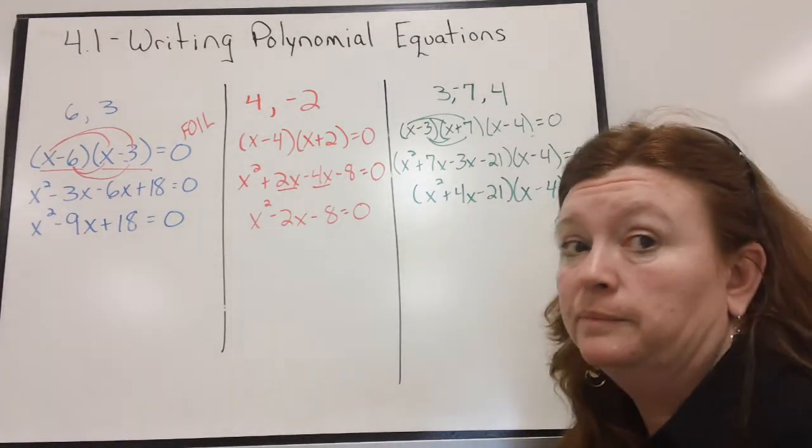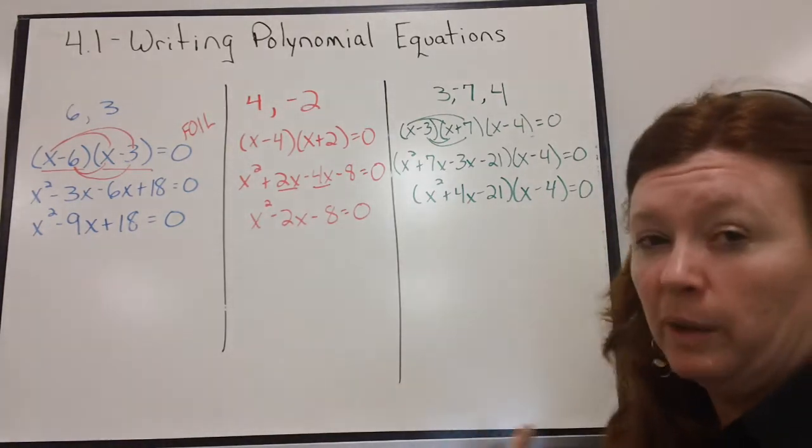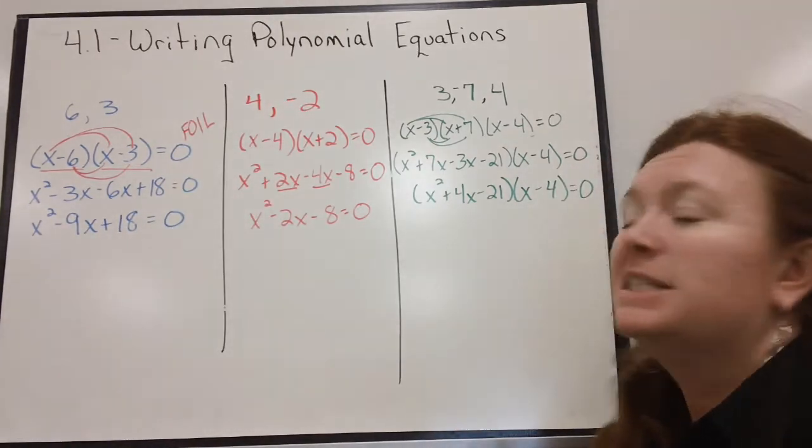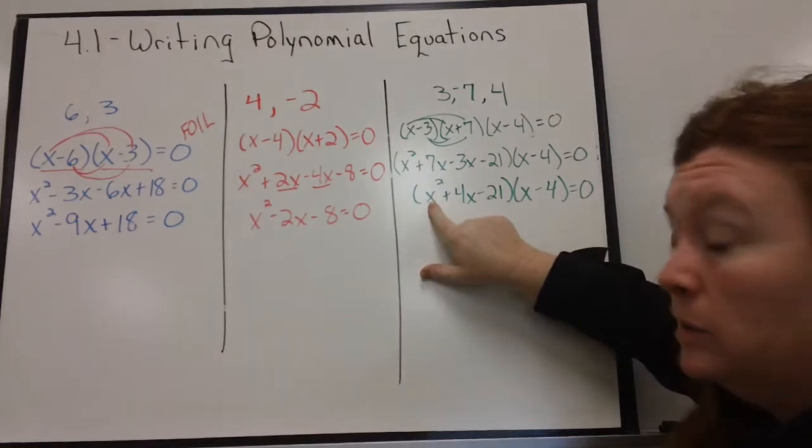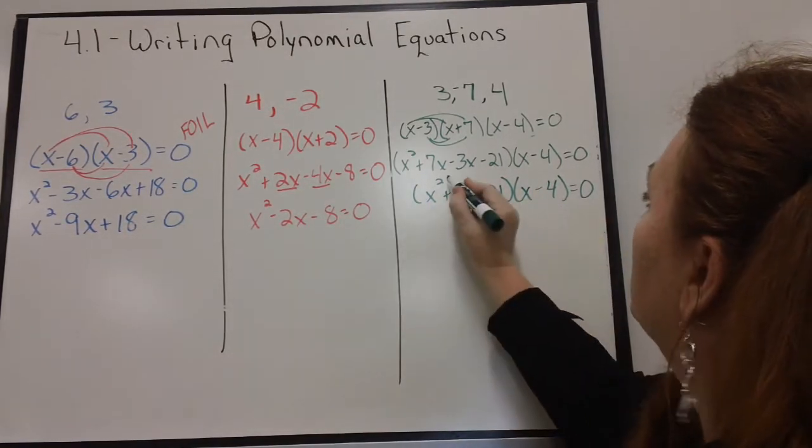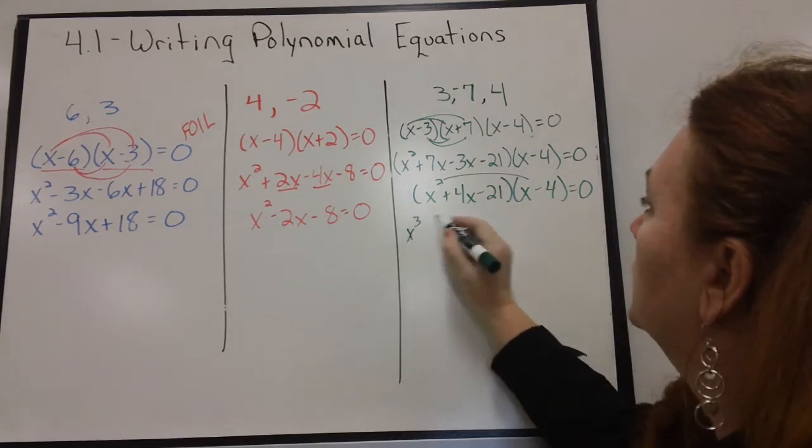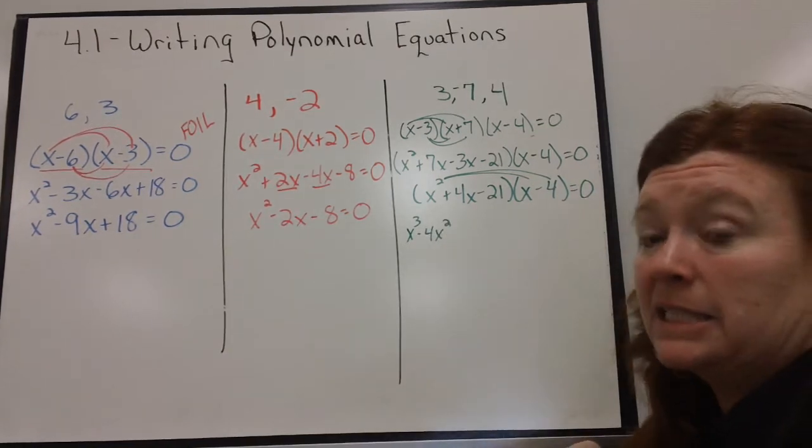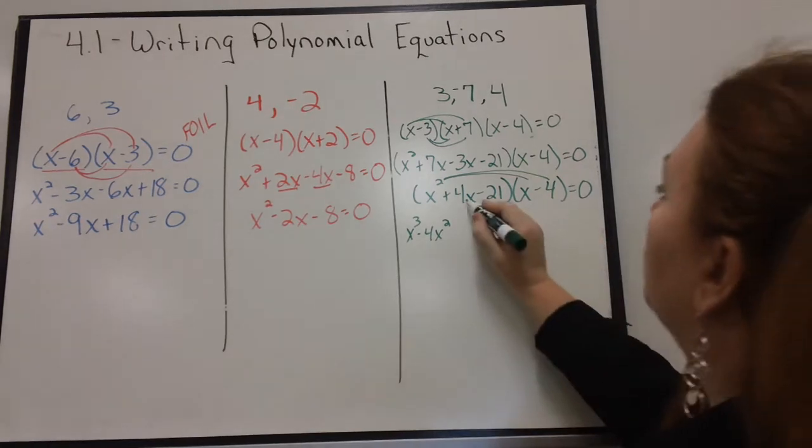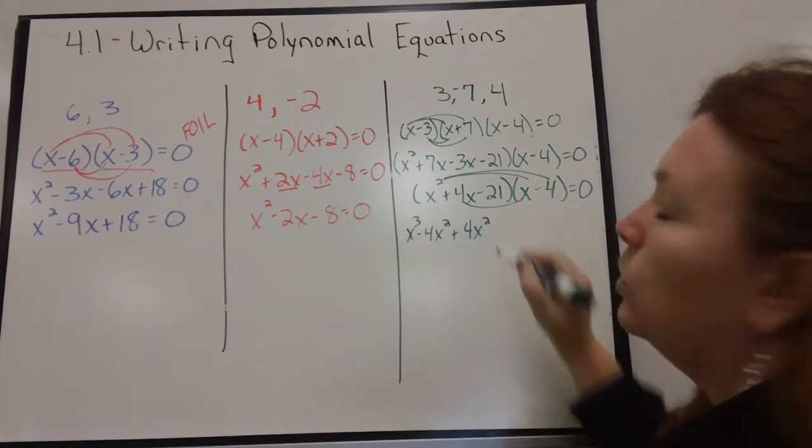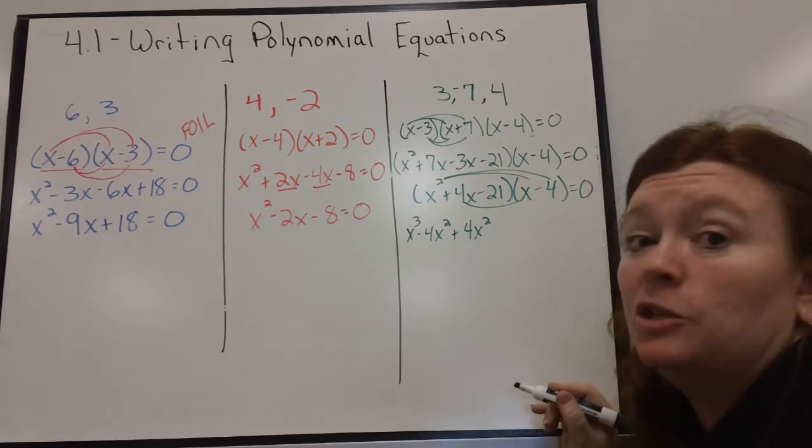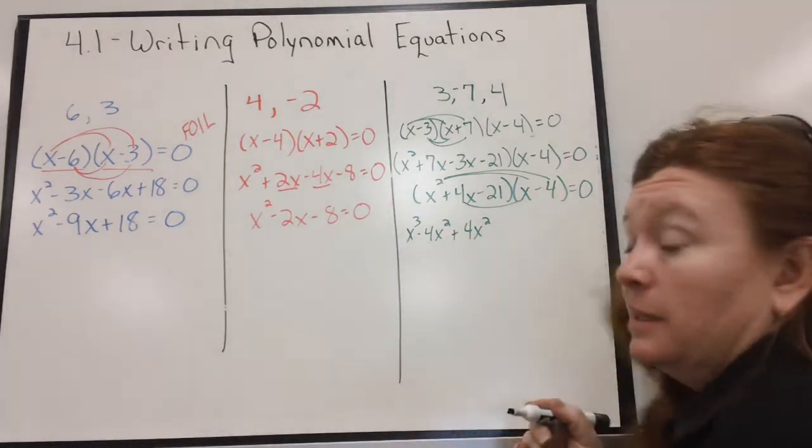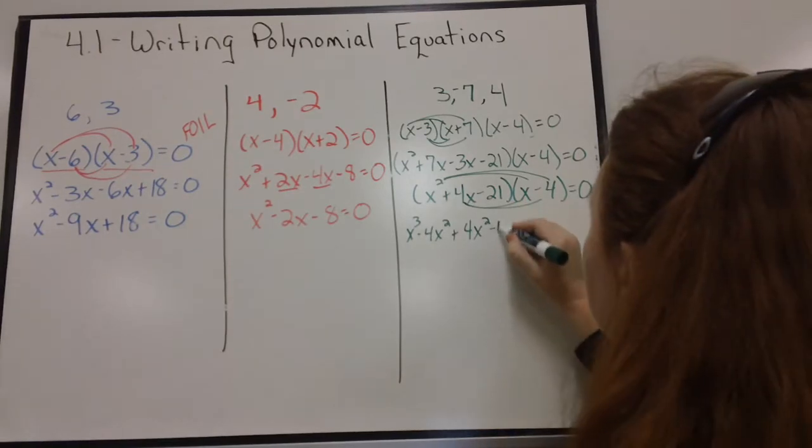Now, I can't use the word FOIL. I can't use the word FOIL because first, outer, inner, last doesn't work when you have 3 terms times 2 terms. But it's still the same concept. It's still X squared times each of these. So, X squared times X is X cubed. X squared times negative 4 is negative 4X squared. Next, 4X times each of these. 4X times X is a positive 4X squared. Oh, something's about to happen. We're lucky that doesn't usually happen. But these are going to cancel. That's not normal, but that's okay. I'll take it. 4X times a negative 4 is a negative 16X.